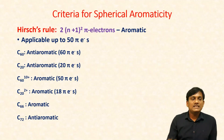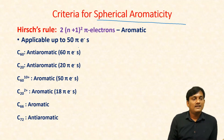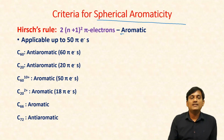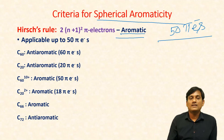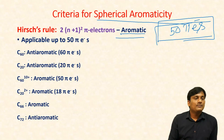To predict the aromaticity of fullerenes — spherical aromaticity — Hirsch proposed a rule: if the fullerene contains 2(n+1)² pi electrons, that compound is aromatic. This rule is valid up to 50 pi electrons. If the number of pi electrons exceeds 50, Hirsch's rule is not applicable. Let's take C60.